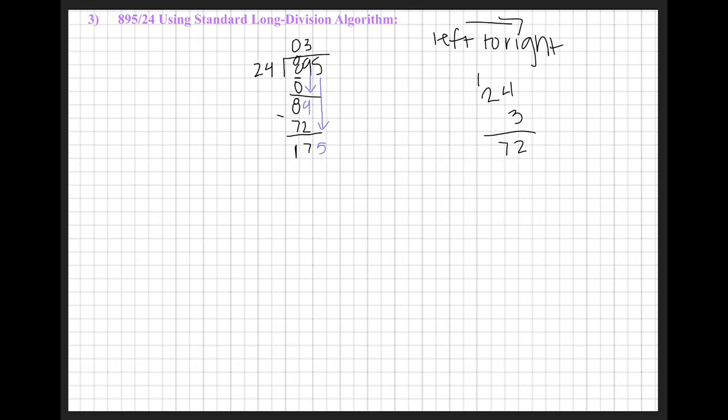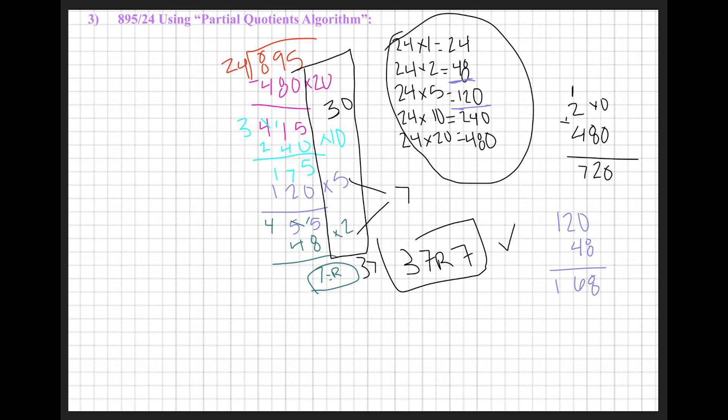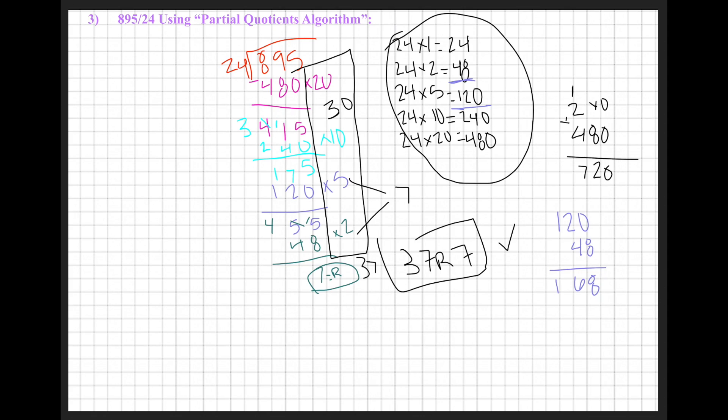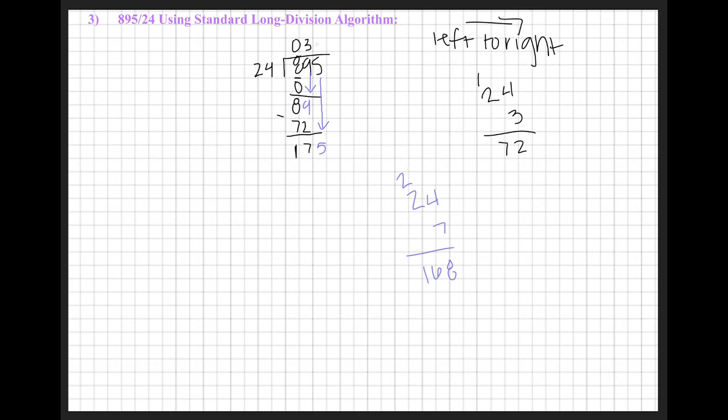When you add 120 plus 48, we're getting 168. And when we do 24 times 7, because remember the 5 plus the 2 are the 7 times, so we multiply 24 times 7, we will get 168, the same way that we got 168 here. So I'm going to put my 7 up here. We know 7 times 24 is 168, and then when I subtract these values, I end up getting 7.